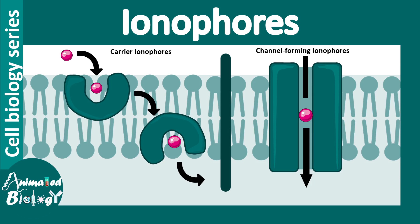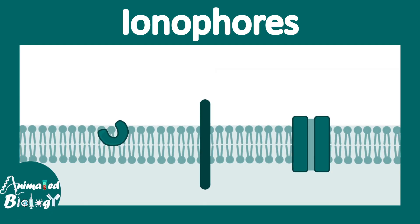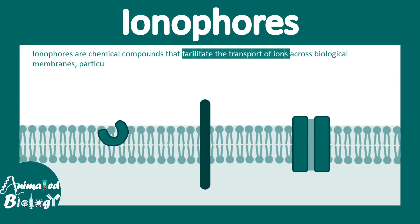In this short video we'll talk about ionophores. Ionophores are chemical compounds that facilitate the transport of ions across biological membranes, particularly across the lipid bilayers of cells. Generally, ions cannot travel across the membrane unless there is a carrier or an ion channel.